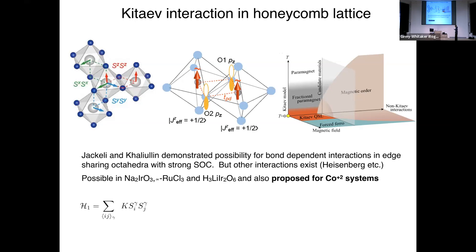As I mentioned, in various iridate and ruthenate compounds this physics has been studied quite a bit. But it's also been proposed for cobalt 2+ systems, which is the point of my talk today. There's been a lot of quite interesting work done in iridates and ruthenates.